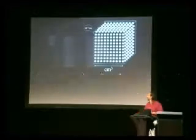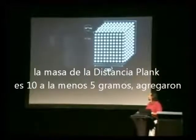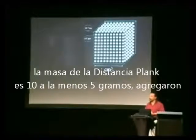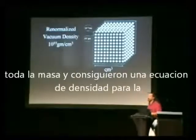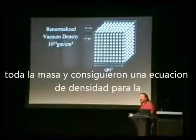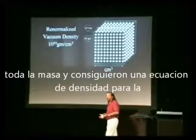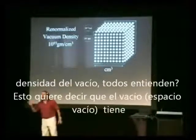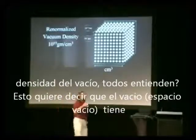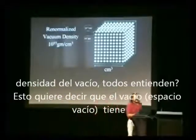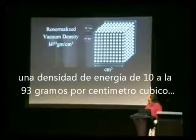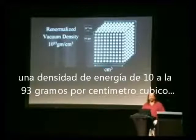The mass of the Planck's distance is 10 to the minus 5 grams. They added all the mass and got a density equation for the density of the vacuum. This means that the vacuum has a density of energy of 10 to the 93 grams per centimeter cube.